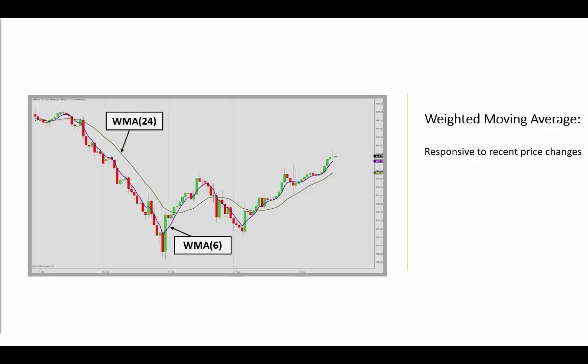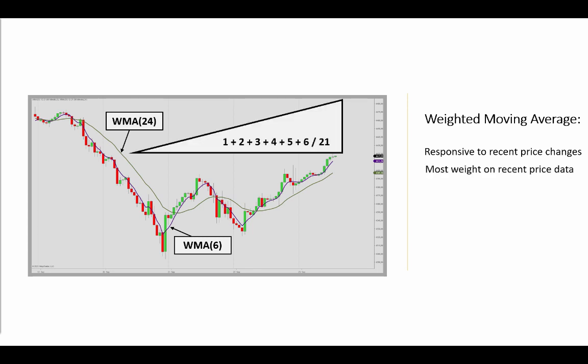Then we have the weighted moving average. It's more responsive to recent price changes, because it's successively adding more weight to the data points, attributing most weight to the recent and least to the first. And that approach may be illustrated with a rectangular form — one point for the first data point, two, three, four, five, and six divided by 21.